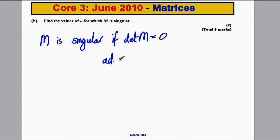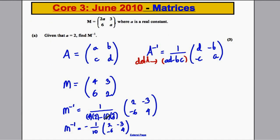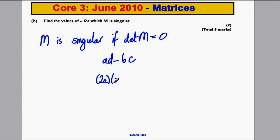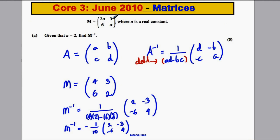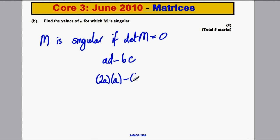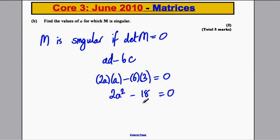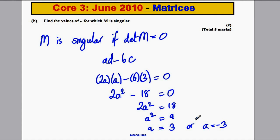The determinant in general is AD minus BC. For our particular matrix that is 2A multiplied by A, subtract 6 multiplied by 3, set equal to 0. So 2A squared minus 18 equals 0. Add 18 to both sides: 2A squared equals 18. Divide by 2: A squared equals 9. Take square roots — be very careful: A is either 3 or A is negative 3, since taking square roots gives a positive and negative answer.